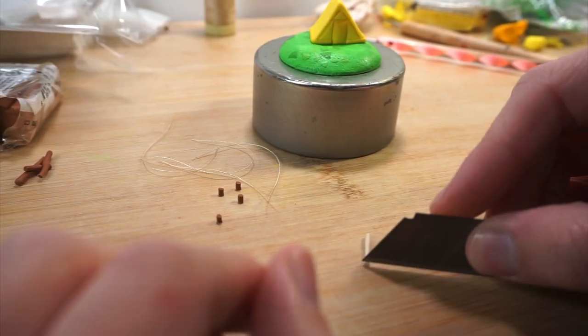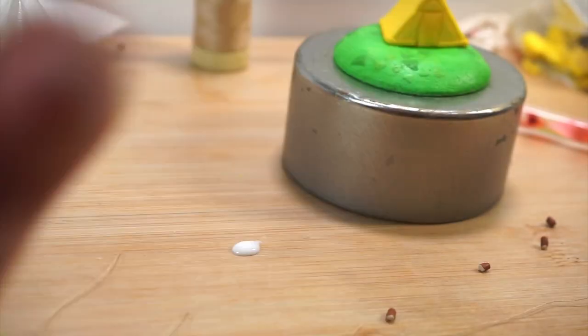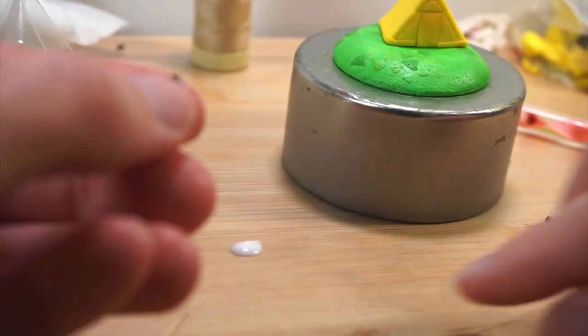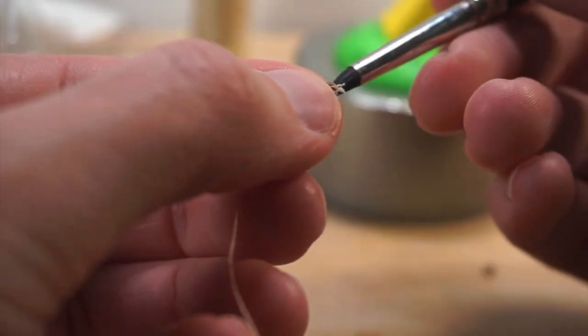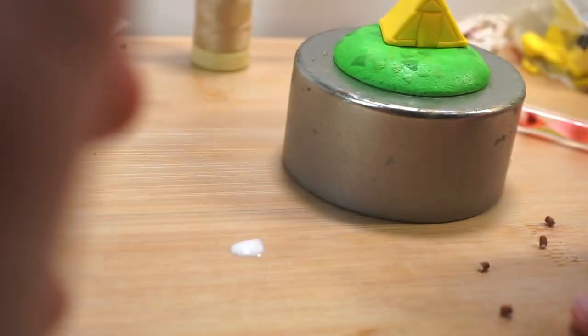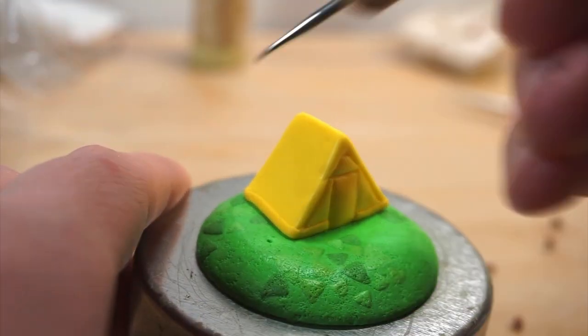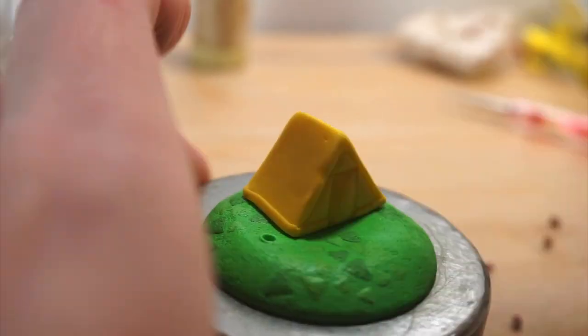These are going to be wooden posts, so they're just a darker brown clay with a lighter brown clay. I originally wanted to actually wrap my thread around, but that ended up being an absolutely horrible idea and didn't work and was way too frustrating.